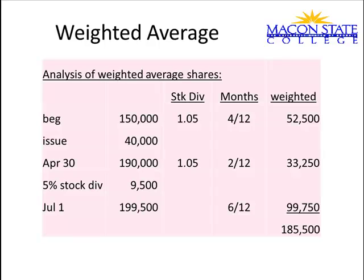If you have a stock dividend, as is the case in this particular scenario, you would have to weight all the subtotals prior to that stock dividend. And then for each of the subtotals, however many months that subtotal was true, you weigh it for that number of months.